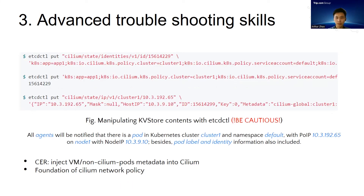The last skill is to manipulate kvstore contents with etcdctl. This needs a deep understanding of Cilium data models. For example, with three specific entries inserted into the kvstore, all agents will be notified that a pod was created in Kubernetes cluster 1, namespace default, with its IP address, name, IP labels, and identity information. Essentially, this is how we injected virtual machines into Cilium scope in our CER solution, and it's also the basis of Cilium network policy. But manipulation of Cilium stores and BPF maps is dangerous, so we do not recommend performing these operations in production unless you know what you are doing.